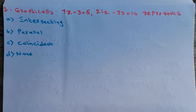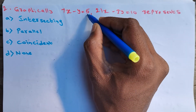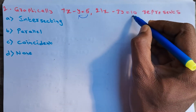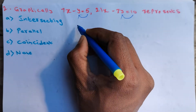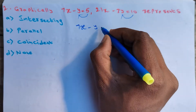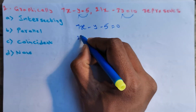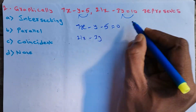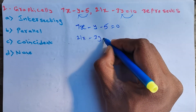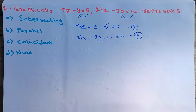Graphically, 7x − y = 5 and 21x − 3y = 10 represents what? Taking constants to the left side: 7x − y − 5 = 0 is equation 1, and 21x − 3y − 10 = 0 is equation 2.